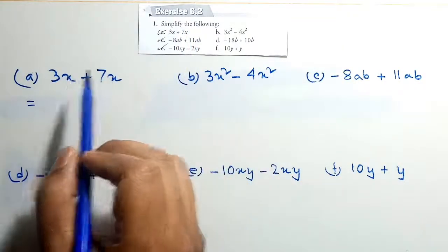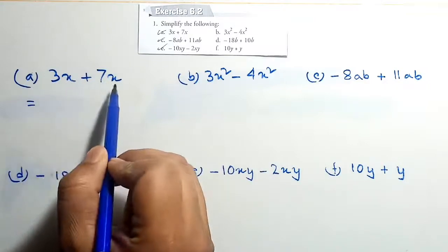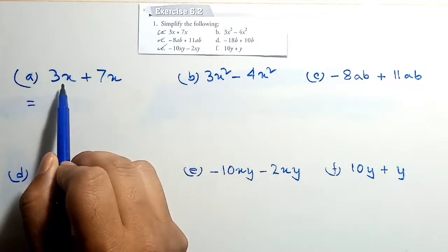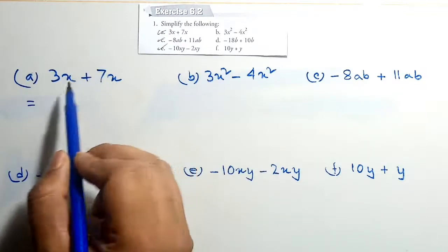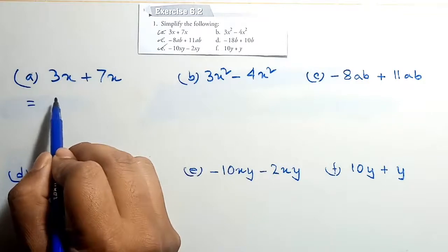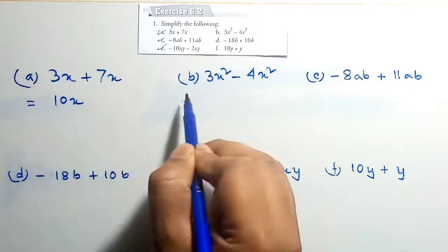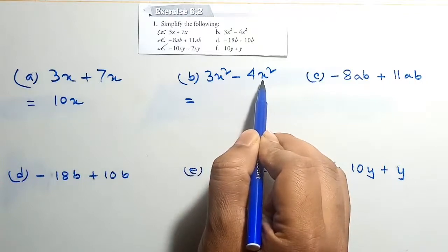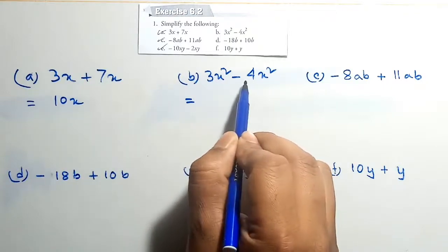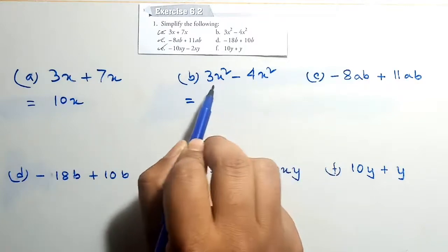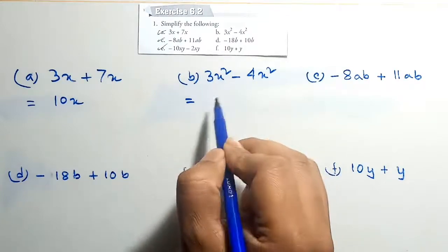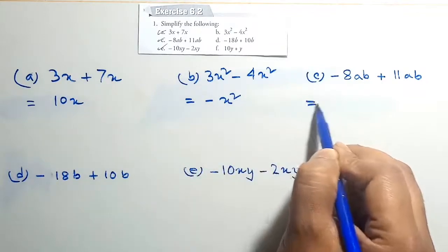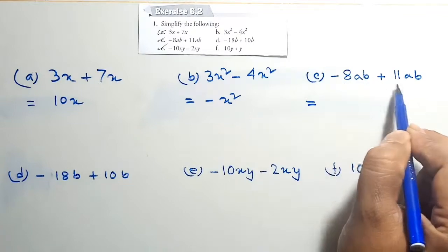Exercise 6.2, question A: 3x plus 7x — these are like terms, so 3x plus 7x equals 10x. Next, 3x² minus 4x²: 4x² is a smaller term than 3x², so when you subtract 4x² from 3x² we get minus x².